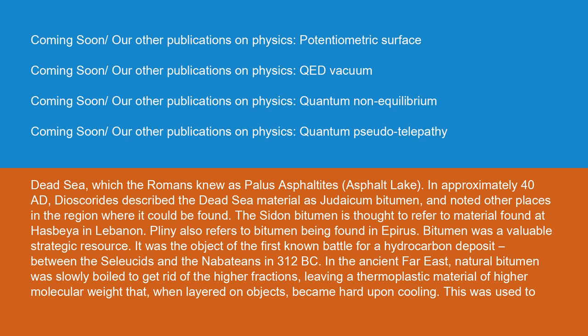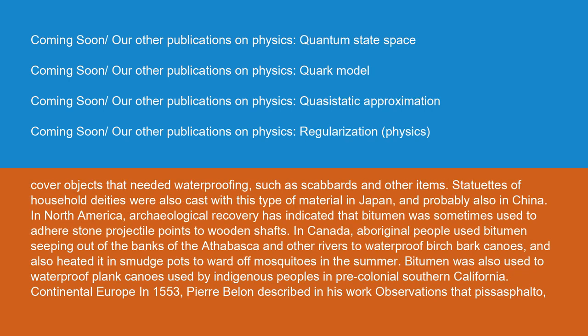In the ancient Far East, natural bitumen was slowly boiled to get rid of the higher fractions, leaving a thermoplastic material of higher molecular weight that, when layered on objects, became hard upon cooling. This was used to cover objects needing waterproofing, such as scabbards. Statuettes of household deities were also cast with this type of material in Japan, and probably also in China. In North America, bitumen was sometimes used to adhere stone projectile points to wooden shafts. In Canada, Aboriginal people used bitumen seeping from the banks of the Athabasca River to waterproof birch bark canoes and to ward off mosquitoes. Bitumen was also used to waterproof plank canoes used by indigenous peoples in pre-colonial Southern California.